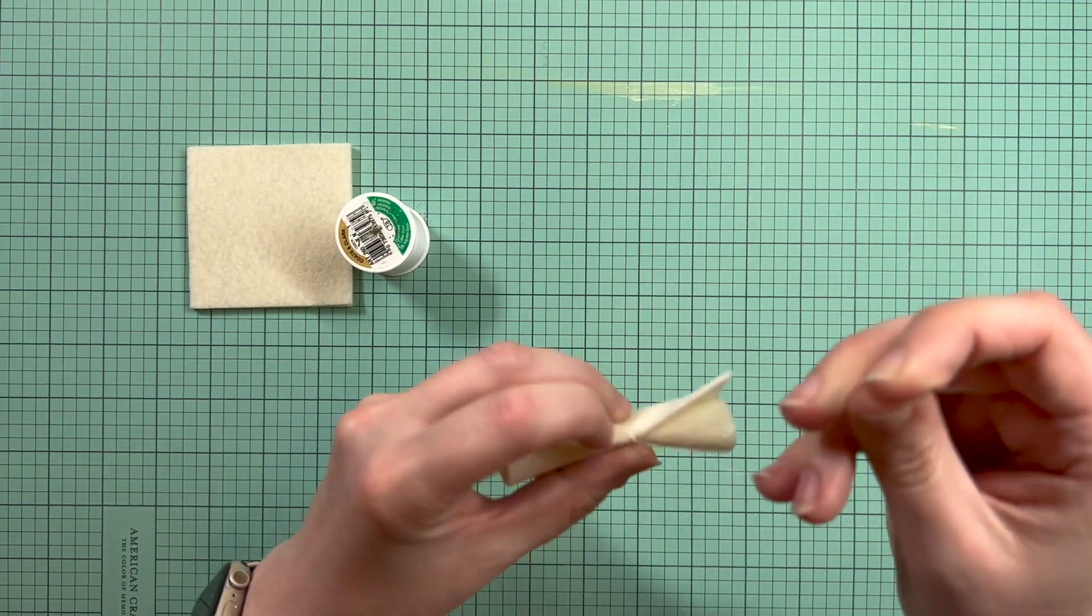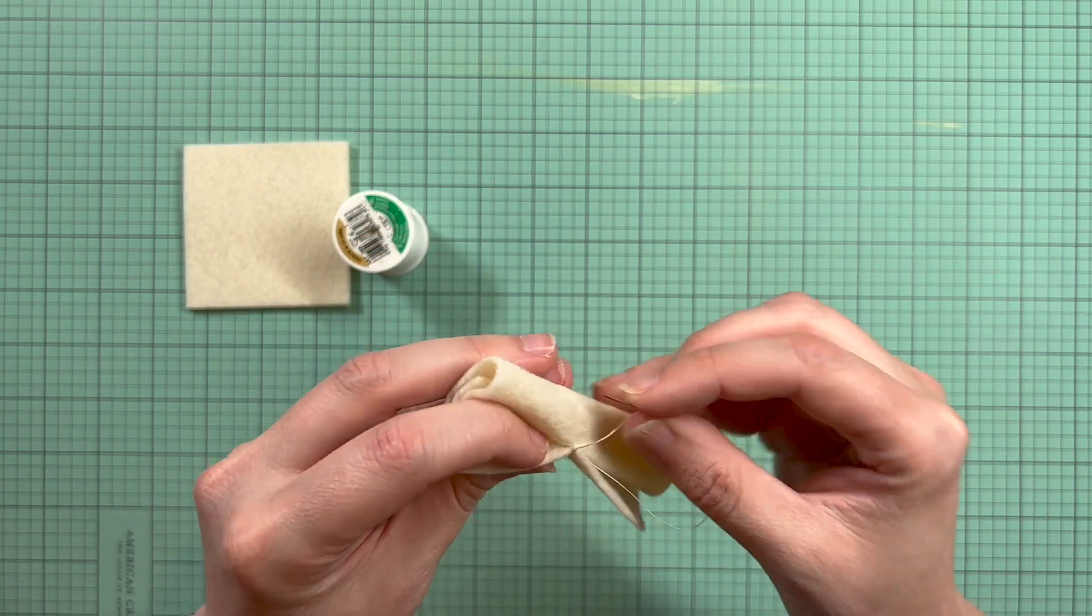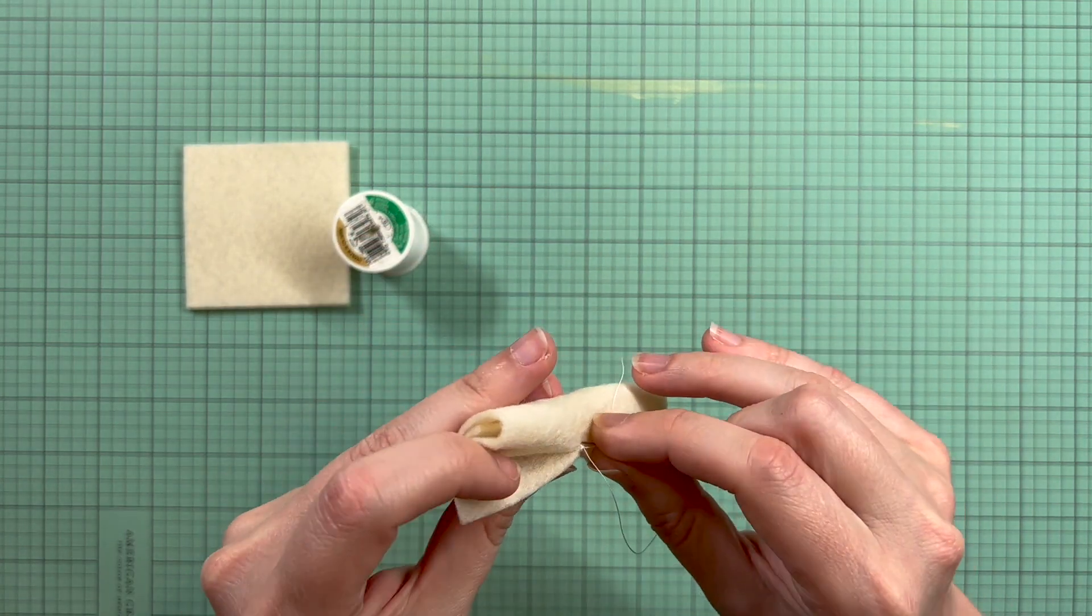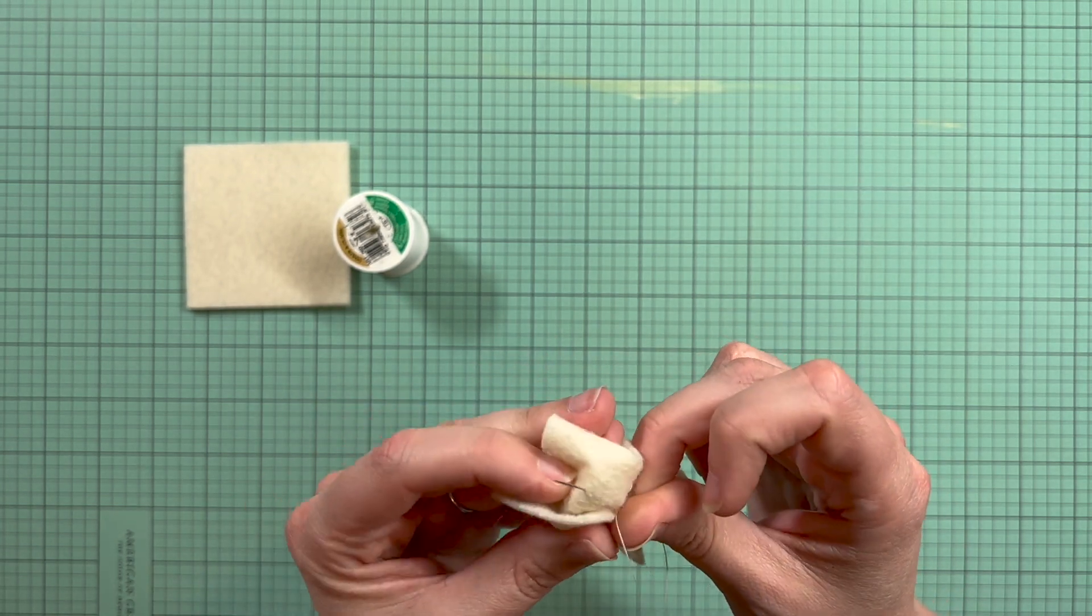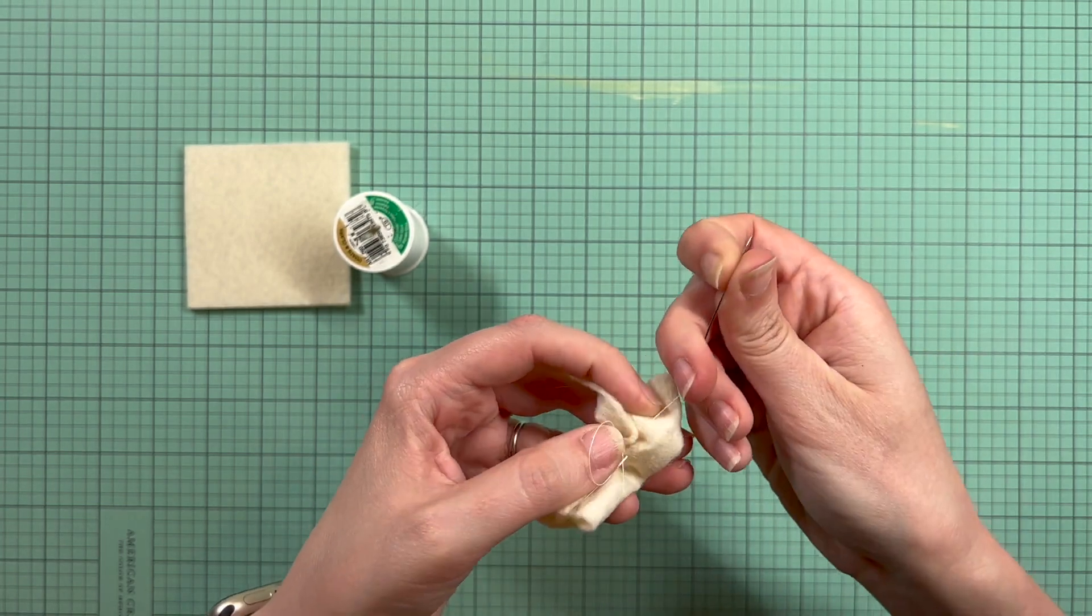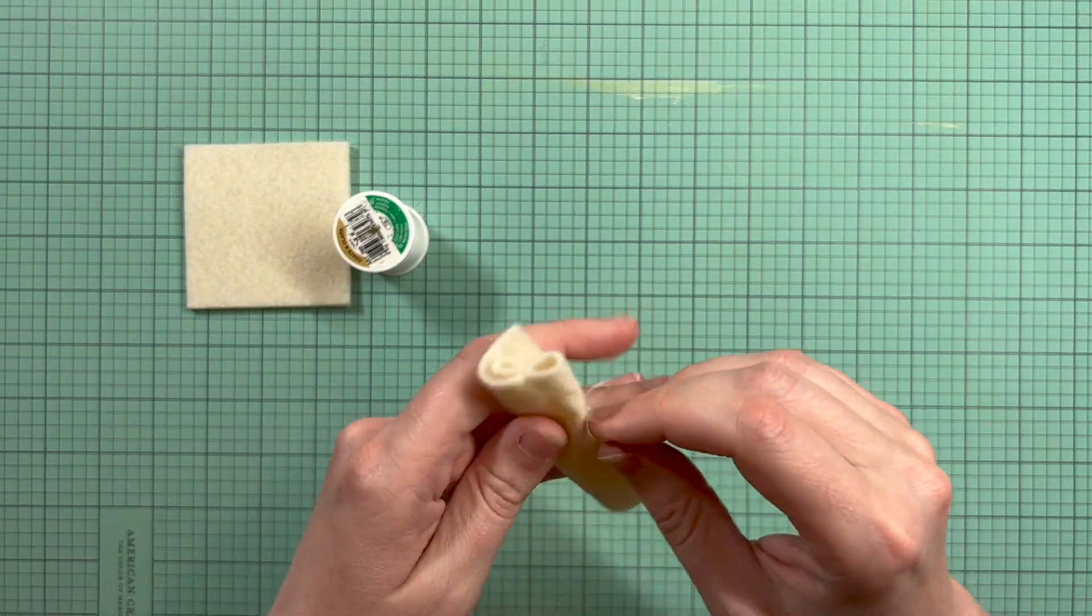And then to hide the end of my thread, I'm just going to tuck it back in underneath. I'm inserting my needle right near where my stitches are going a little ways underneath my felt, and then kind of squishing it together so that my loop doesn't get caught on the end of my little diploma here.